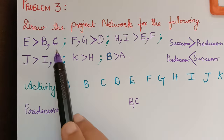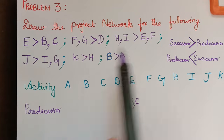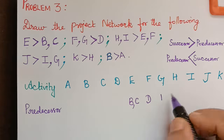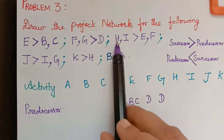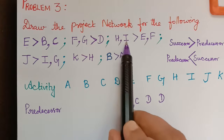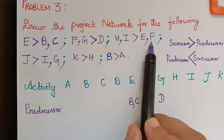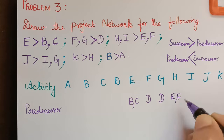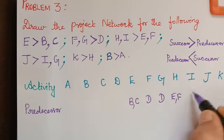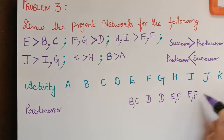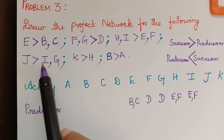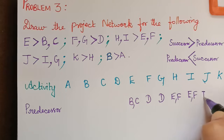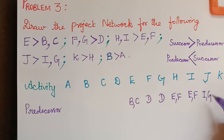For activities F and G, D is the predecessor. Then for activities H and I, the predecessors are E and F — so for H we write E and F. Activity I and G are the predecessors for activity J.